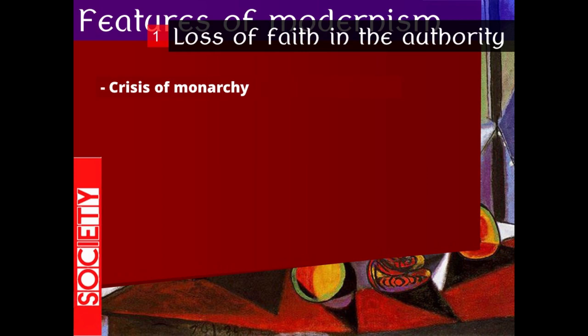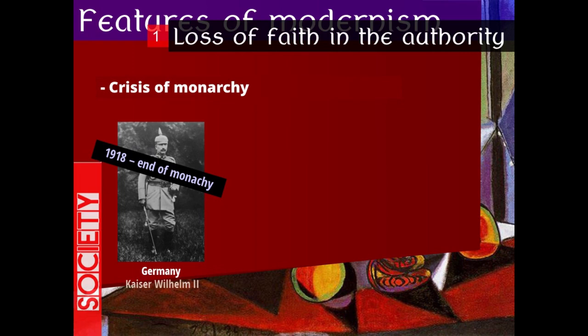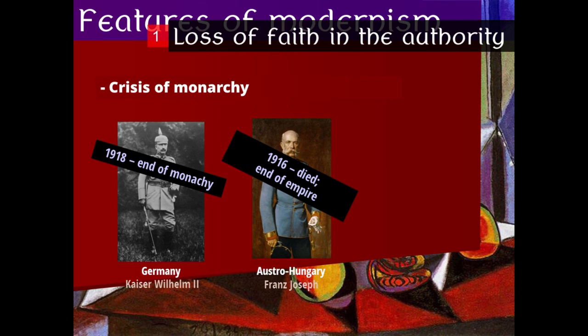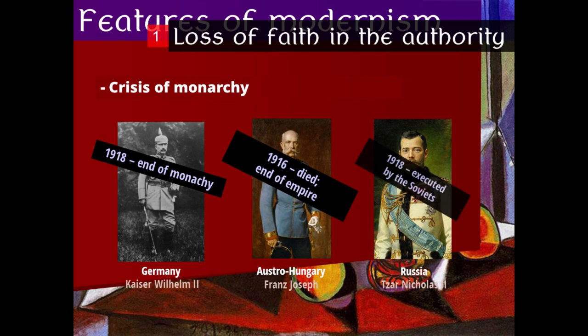Another moment in this loss of faith in authority was the crisis of monarchy that hit the biggest empires. The German Kaiser Wilhelm II was the first to go, by the end of the war in 1918, marking the end of monarchy in Germany. The Austro-Hungarian Emperor Franz Josef died in 1916, which was effectively the death knell of his empire. And in Russia, Tsar Nicholas was executed by the Soviets in 1918.